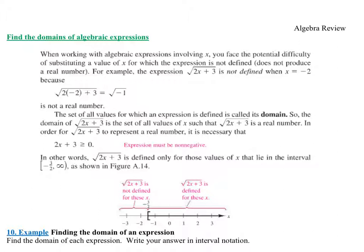When you plug in -2: 2 times -2 is -4, plus 3 gives -1, so you end up with √(-1). You cannot take the square root of any negative number — you can only take the square root of zero and positive numbers, which are called non-negative numbers. The set of values for which the expression is defined is called the domain. It's usually an infinite number of values, so we write the domain in interval notation.